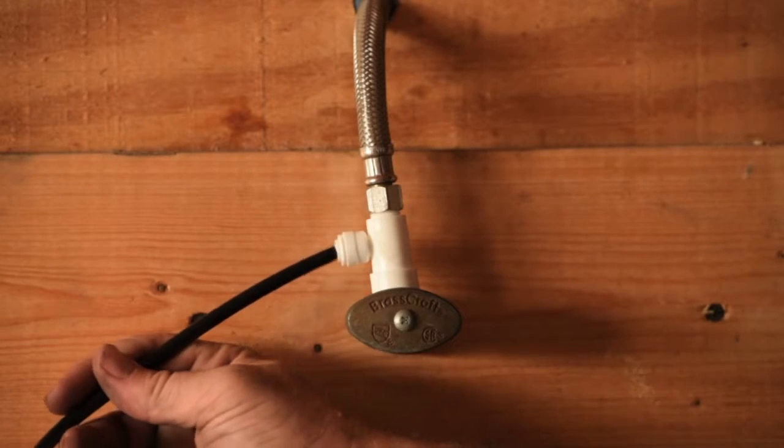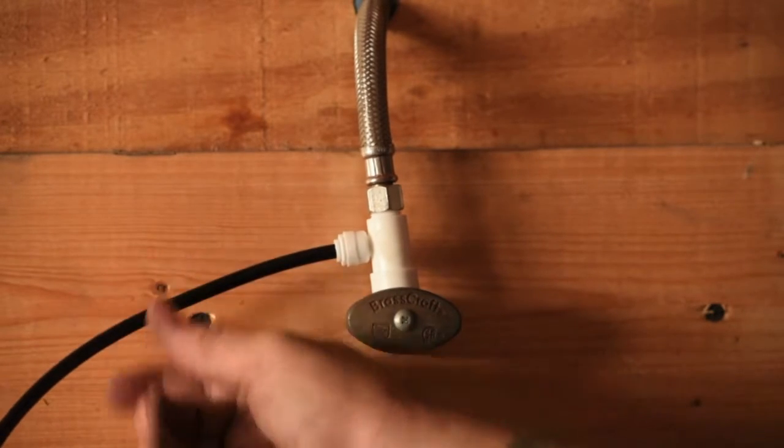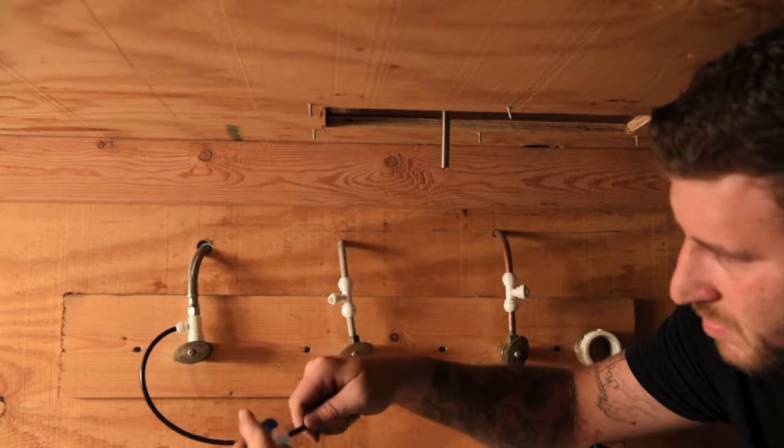Place your quarter inch line into the John Guest fitting on the side and place a shutoff valve on the line going to the RO.